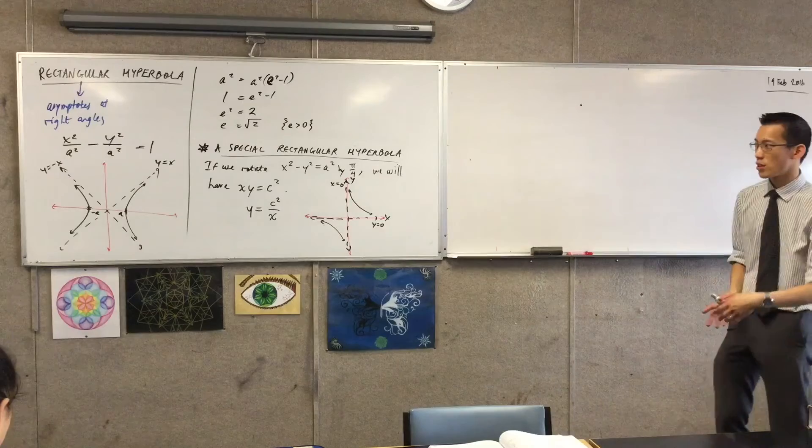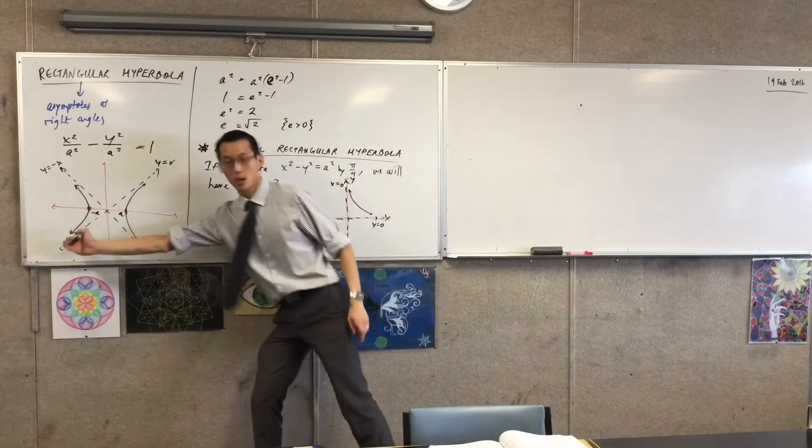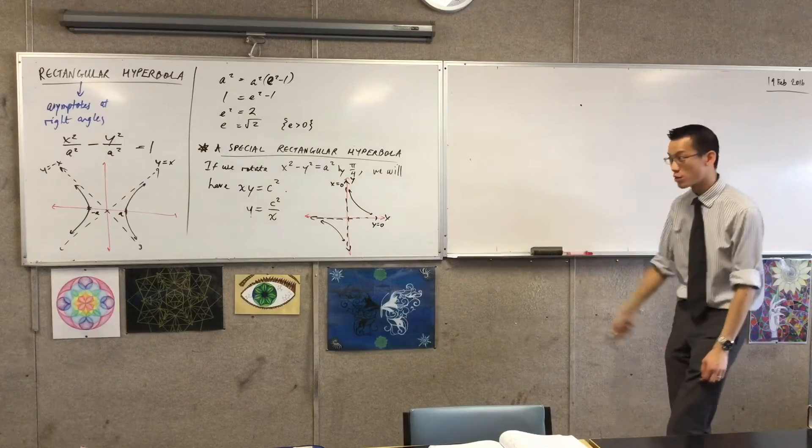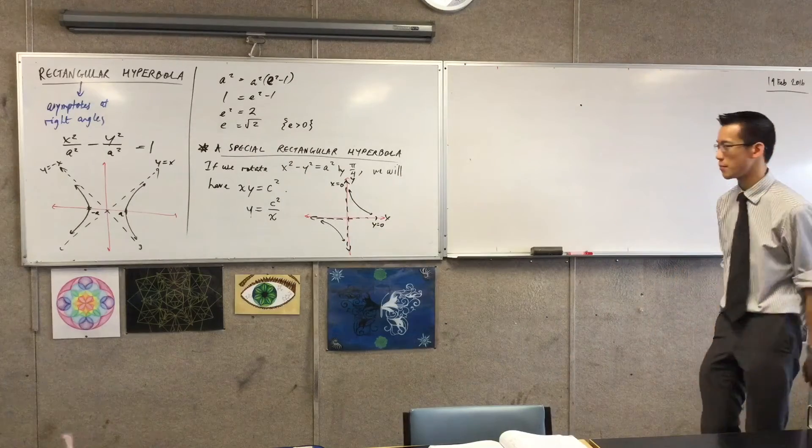Like just orient your head so that you're looking at it with this asymptote being upright, and you'll see the same hyperbola. It is exactly the same thing.